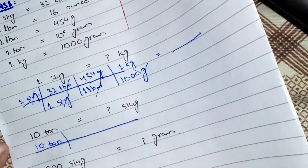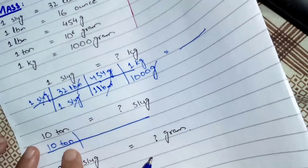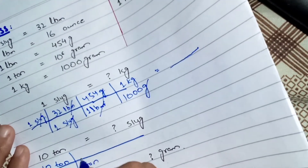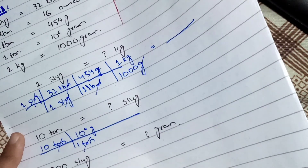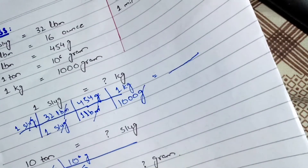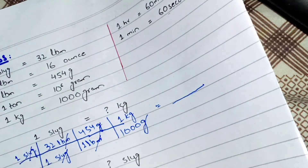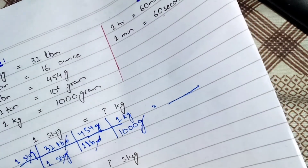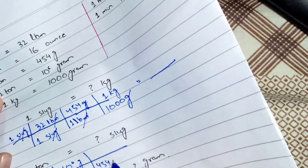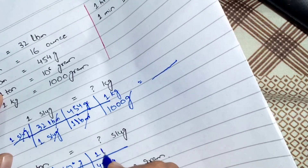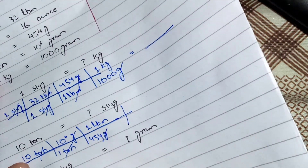We have 10 ton. First I use the relationship: 1 ton equals 10 to the power 6 gram, placing ton in the denominator to cancel it out. Now I use gram to lbm conversion: 1 lbm equals 454 gram, so 454 gram goes in the denominator and 1 lbm in the numerator — this gram cancels that gram.